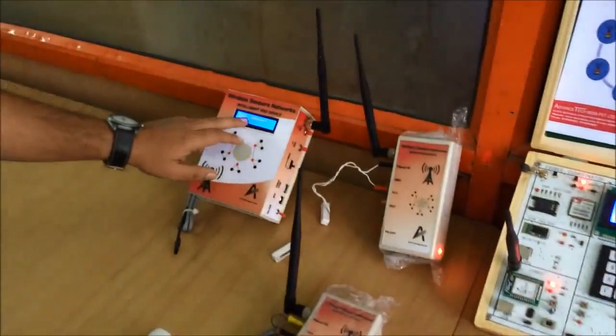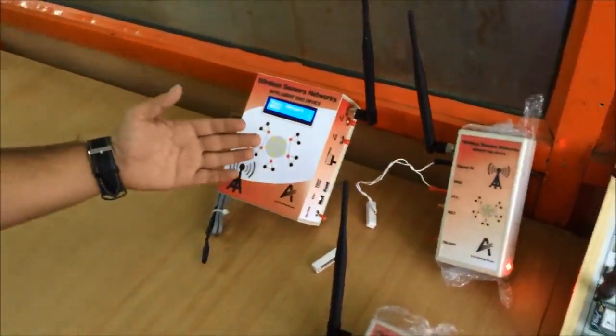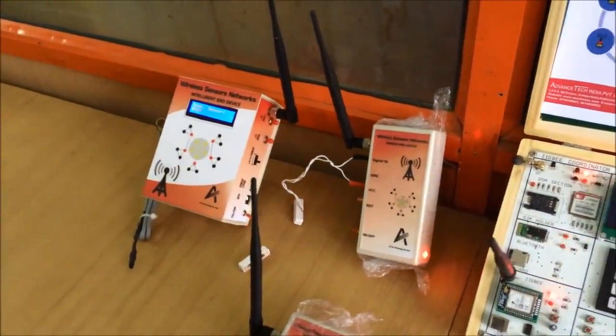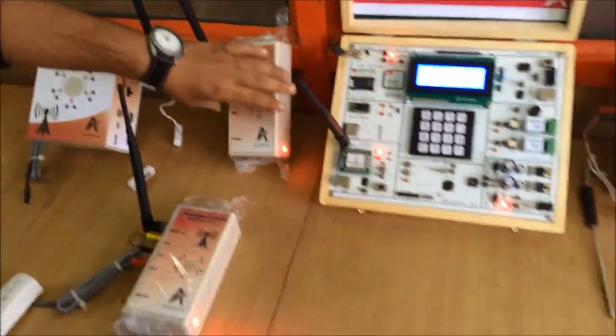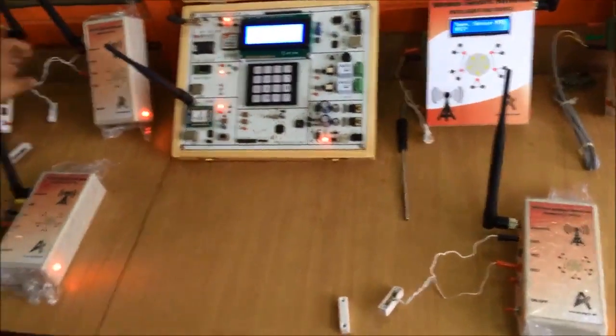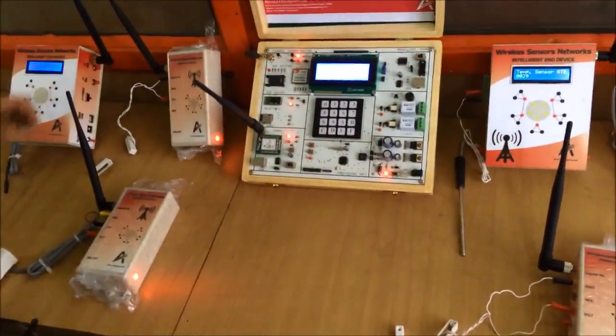And those sensors are showing the values like temperature 28 degrees Celsius and humidity 60%. And these are the non-intelligent end nodes which are having the digital sensors like magnetic sensors, vibration sensors you can install.